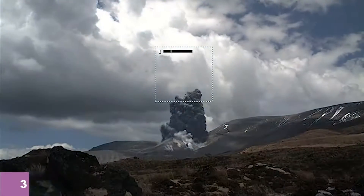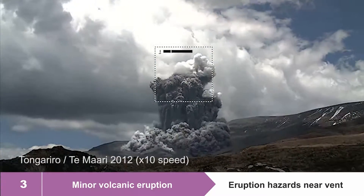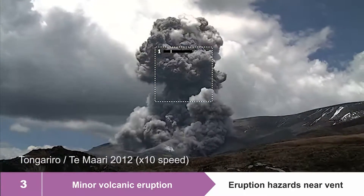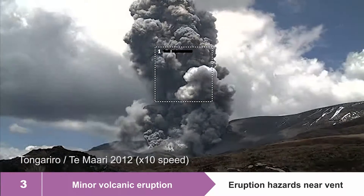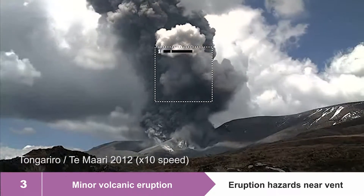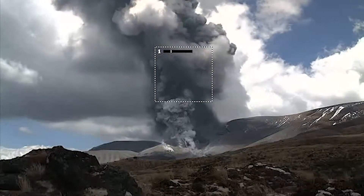Volcanic alert level three is a minor volcanic eruption. The eruption will be affecting just the area around the active volcanic vent, i.e. the summit of the volcano and near the vent.